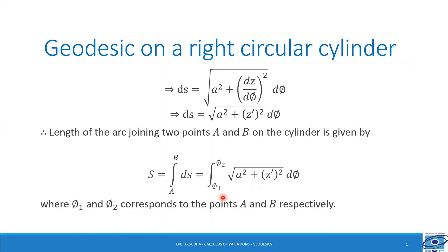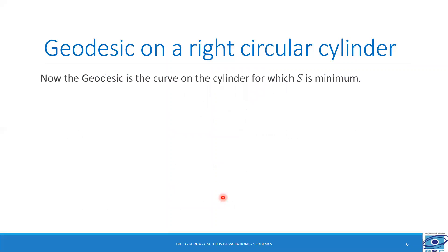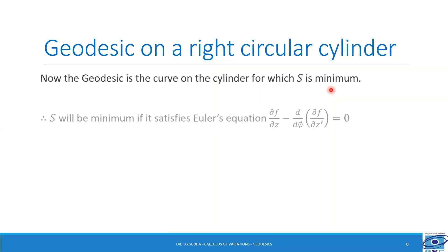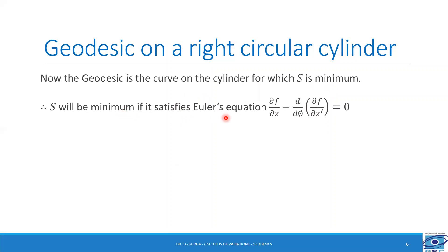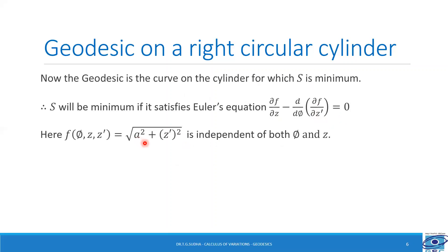Now, for a geodesic, S must be minimum. For S to be minimum, it has to satisfy the Euler equation. So the geodesic is the curve on the cylinder for which S is minimum. For S to be minimum, it must satisfy Euler's equation: ∂f/∂z − d/dφ (∂f/∂z′) = 0. But here, F = √(A² + z′²) which is independent of both φ and z. Therefore, the Euler equation reduces to z″ = 0.